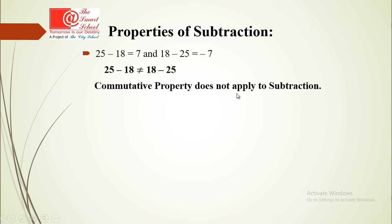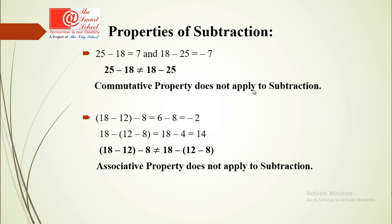For commutative property: 25 minus 18 equals 7, but 18 minus 25 equals minus 7. So 25 minus 18 is not equal to 18 minus 25, meaning commutative property does not apply to subtraction. For associative property: (18 minus 12) minus 8 equals 6 minus 8 equals minus 2, but 18 minus (12 minus 8) equals 18 minus 4 equals 14. The answers differ, so associative property does not apply to subtraction either.